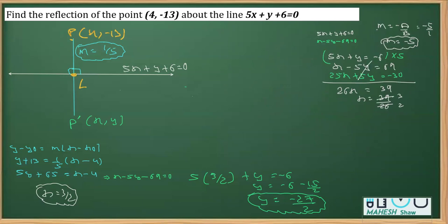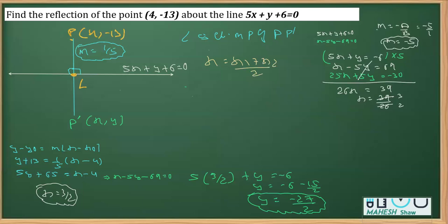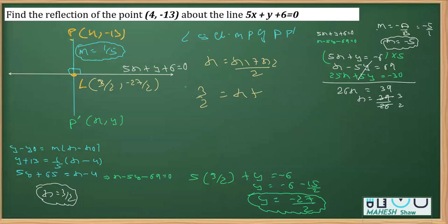Since L is the midpoint of PP-dash — by the law of reflection, the image is equidistant from the mirror as the object — we use the midpoint formula. So x-coordinate of L: 3/2 = (x1 + x2)/2 = (x1 + 4)/2. The 2 cancels, giving x1 = 3 - 4 = -1.